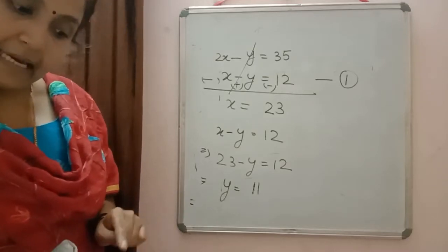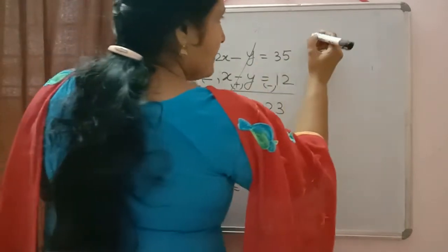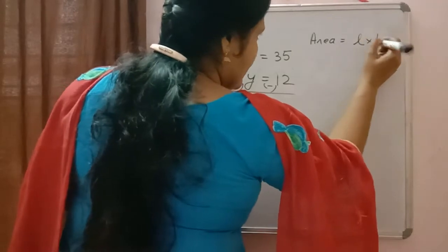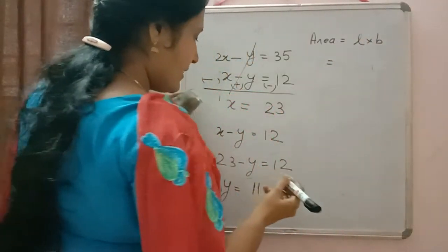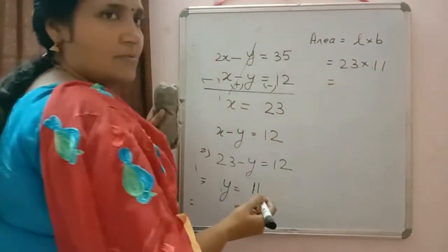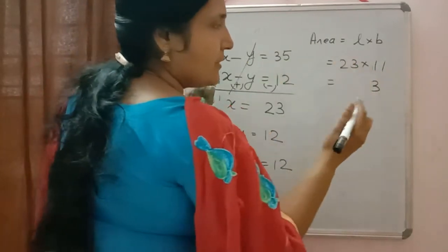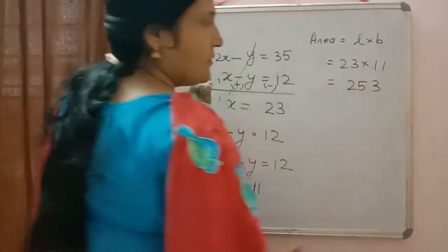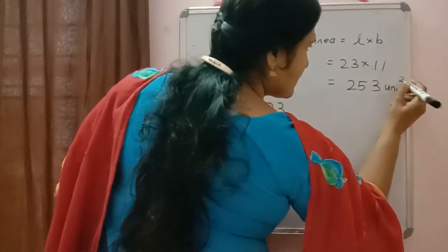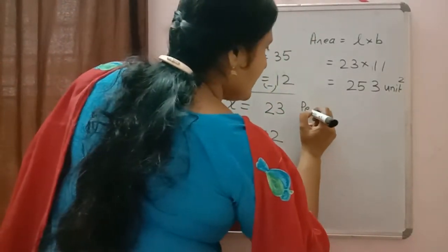The question asks us to find the area and perimeter. Area equals length into breadth: 23 × 11 = 253 square units. For the perimeter, the formula is 2(L + B) = 2(23 + 11) = 2 × 34 = 68 units. Note: area is in square units and perimeter is in units.